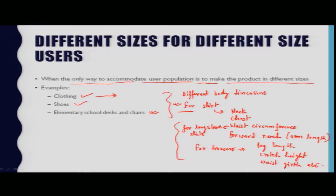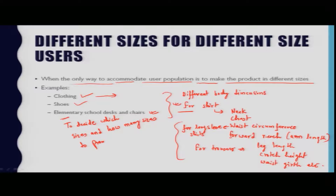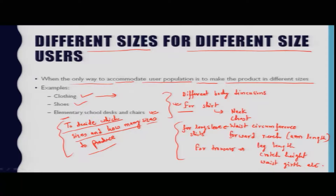Anthropometric data available for all body dimensions are used by the clothing industry to design garments in different sizes. The challenge for individual garment companies is to decide which sizes and how many sizes to produce. The variety of users is huge, and a company has to find the right balance between satisfying customer needs and keeping production and inventory costs in check.